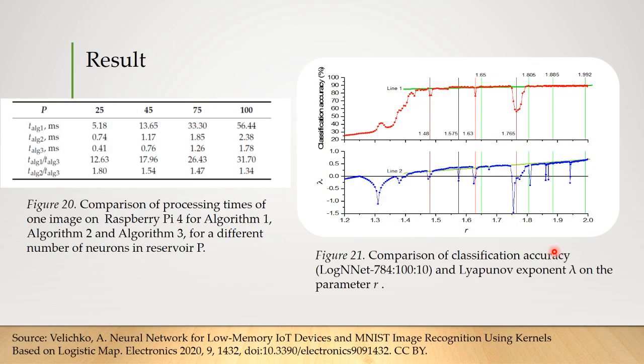The results of performance measurements of the algorithm operation on Raspberry Pi 4 are presented in the table. The top row defines the number of neurons in reservoir P. Algorithm 1 requires the largest amount of time to process the image. It is obviously explained by a higher speed of reading the weight W1 from RAM memory relative to speed of weight recalculation by the processor using the equations. Another interesting observation is that with an increase in the number of neurons in the hidden layer P, the time algorithm 2 to algorithm 3 ratio decreases.